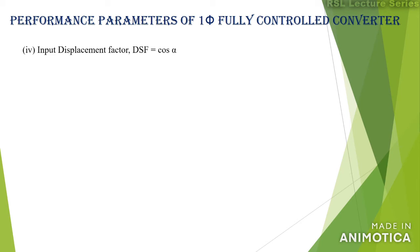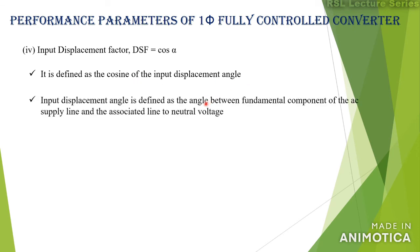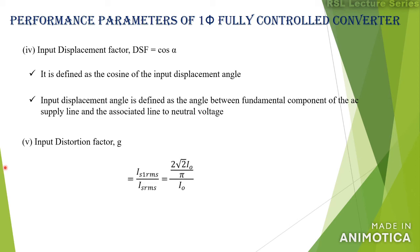The input displacement factor is defined as the cosine of the input displacement angle — the angle between the fundamental component of the AC supply line current and the associated line-to-neutral voltage. Since the current waveform is displaced by angle α, the displacement factor = cos α. The input distortion factor g is defined as the ratio of the RMS value of the fundamental component to the RMS value of the supply current: g = is1(rms)/is(rms) = (2√2/π)·i₀ / i₀ = 2√2/π ≈ 0.9.